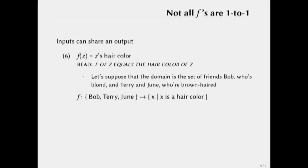And it will do so like this, because Bob is blonde, Terry is brown-haired, June is brown-haired. So in that sense we can get a mapping, we can get all sorts of mappings any kind we like.